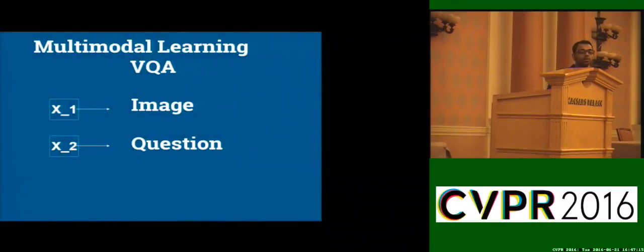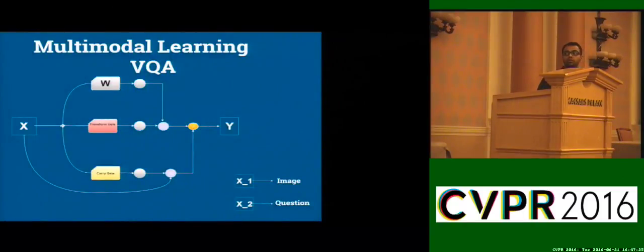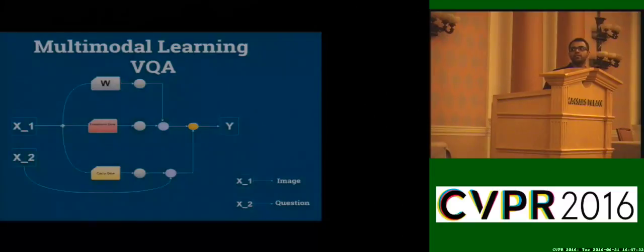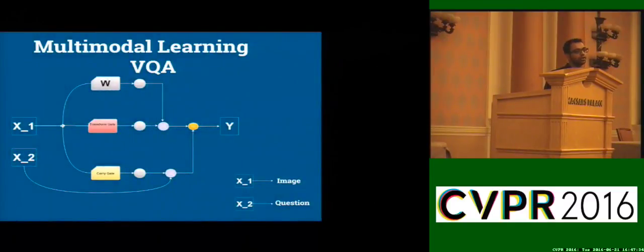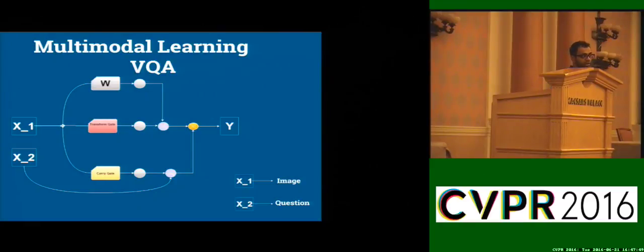For multimodal learning we have two sets of inputs: image and question. The idea is how do we use this building block to learn from two different inputs. My idea was really simple — I was experimenting with different techniques and the simplest approach worked. X2 is the embeddings from the question and X1 is the pre-trained image vectors.